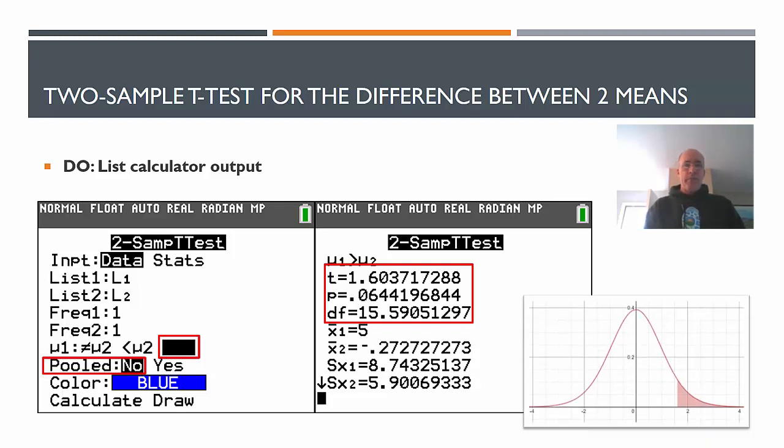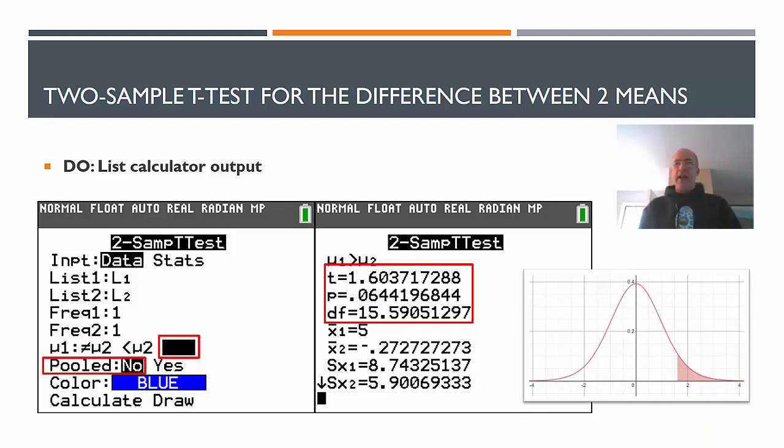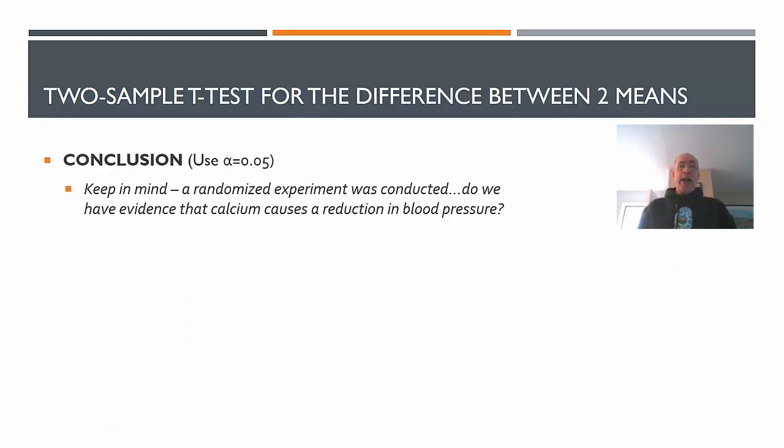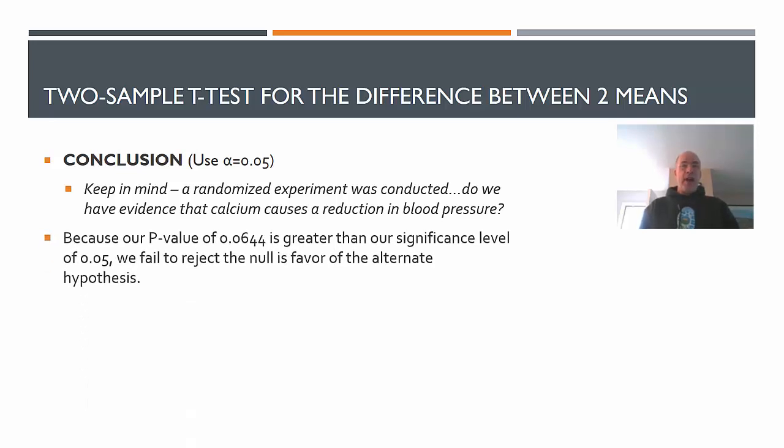I would also draw a sketch here. Here's my sketch. This is my T-statistic sketch, which is centered at zero. Here's our conclusion. We weren't given an alpha, so we will use our usual 0.05. And keep in mind that we were doing a randomized experiment here. So we are attempting to prove cause and effect with what we do here. Does the calcium cause a reduction in blood pressure?